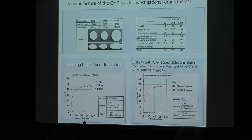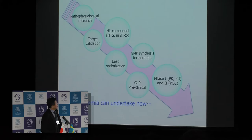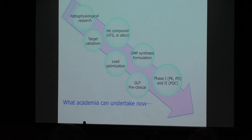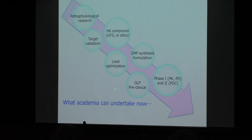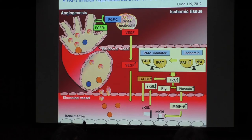These processes — structural optimization, GLP pre-clinical tests, and GMP synthesis — were all conducted independently of the pharmaceutical industry within this university. Currently, academia can undertake the entire drug discovery and clinical development system, even for first-in-class new drugs, from pathophysiological research to validate the target, hit compound identification, lead optimization and new derivative synthesis, GMP synthesis and tablet formulation, GLP pre-clinical studies, and eventual phase 1 and 2 investigator-driven clinical trials.